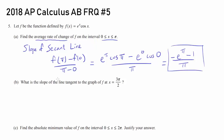Let's go on to the second one. What is the slope of the line tangent to the graph of f at x equals 3 pi over 2? Now we have to differentiate because we are trying to find the slope of the tangent line — the instantaneous rate of change.